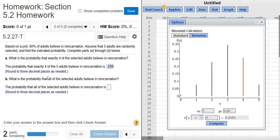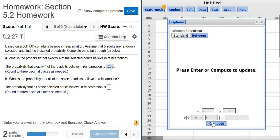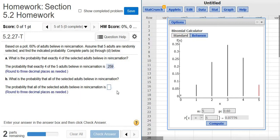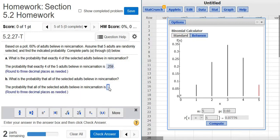So part b, what is the probability that all of the adults believe in reincarnation? So all of the adults, well, that means all 5. So x equals 5. So there it is, 0.078.